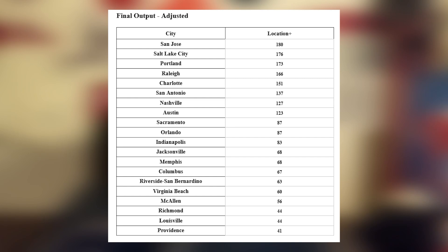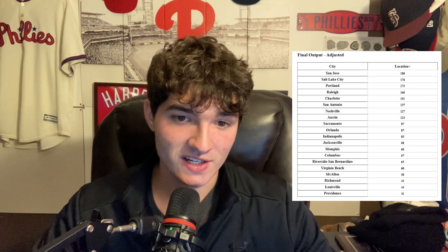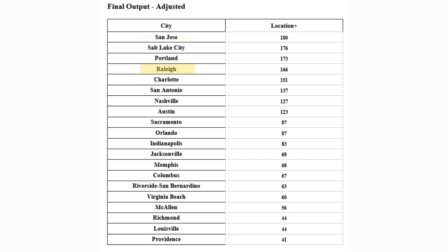The final output and results of the study are on screen now, and the results will surprise you. Despite San Jose being so close to San Francisco, they are still the number one recommendation for Major League Baseball expansion, followed by Salt Lake City and Portland. However, since MLB will likely be placing a team in each region — east and west — we must take one city from each. Therefore, the conclusion for this study is the highest eastern city as the number two option: Raleigh, North Carolina, and in the west, San Jose, California.